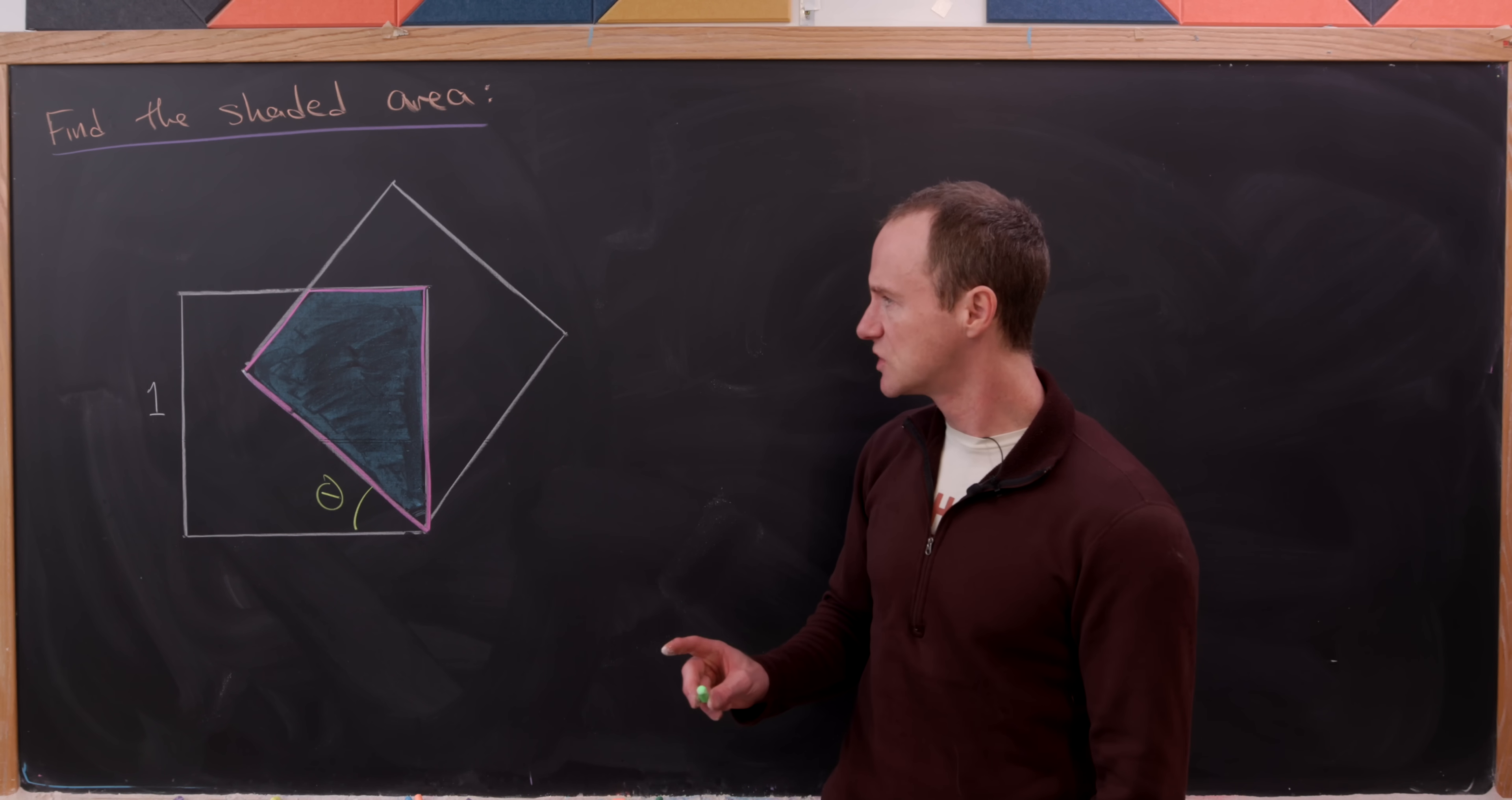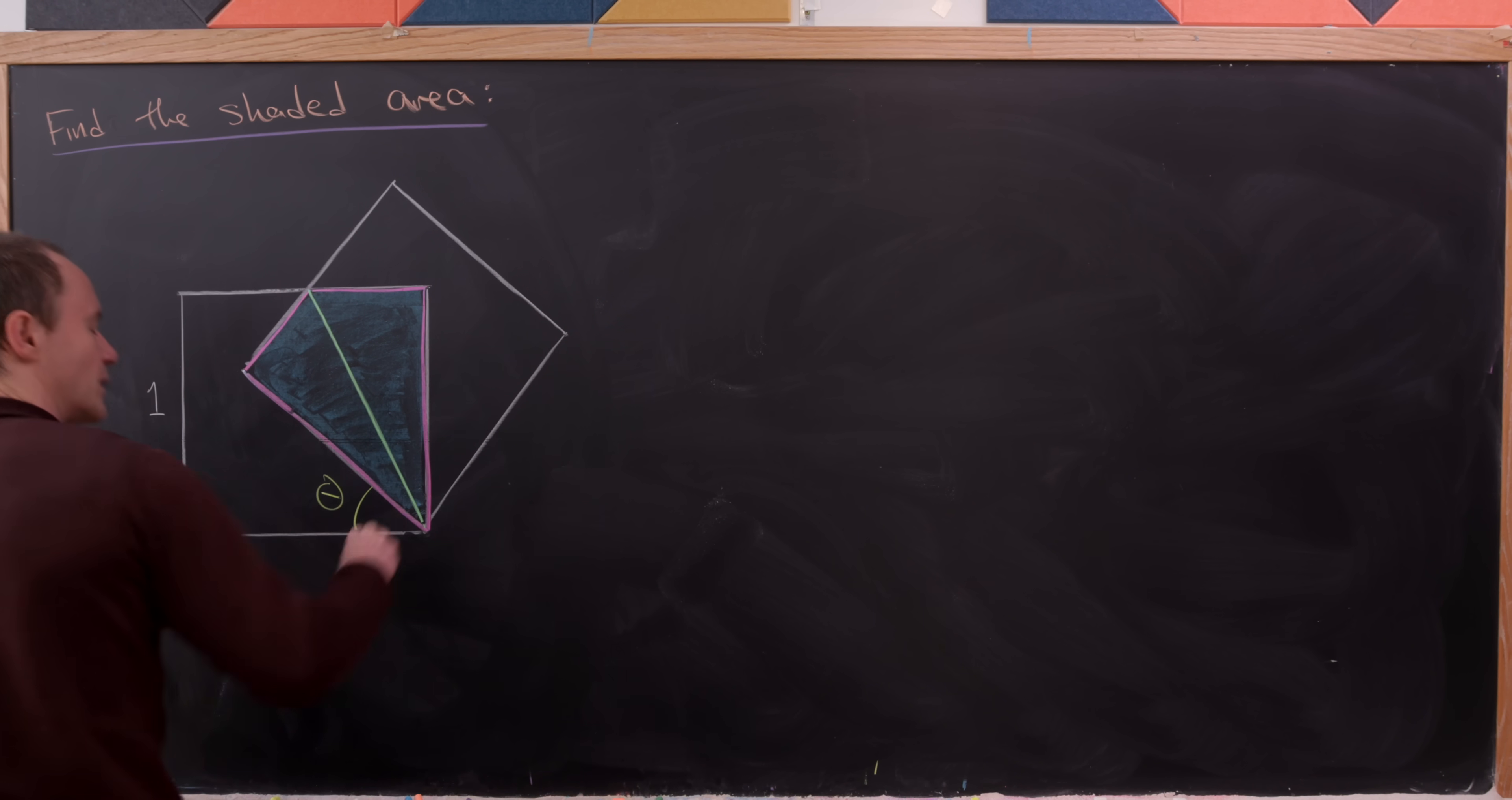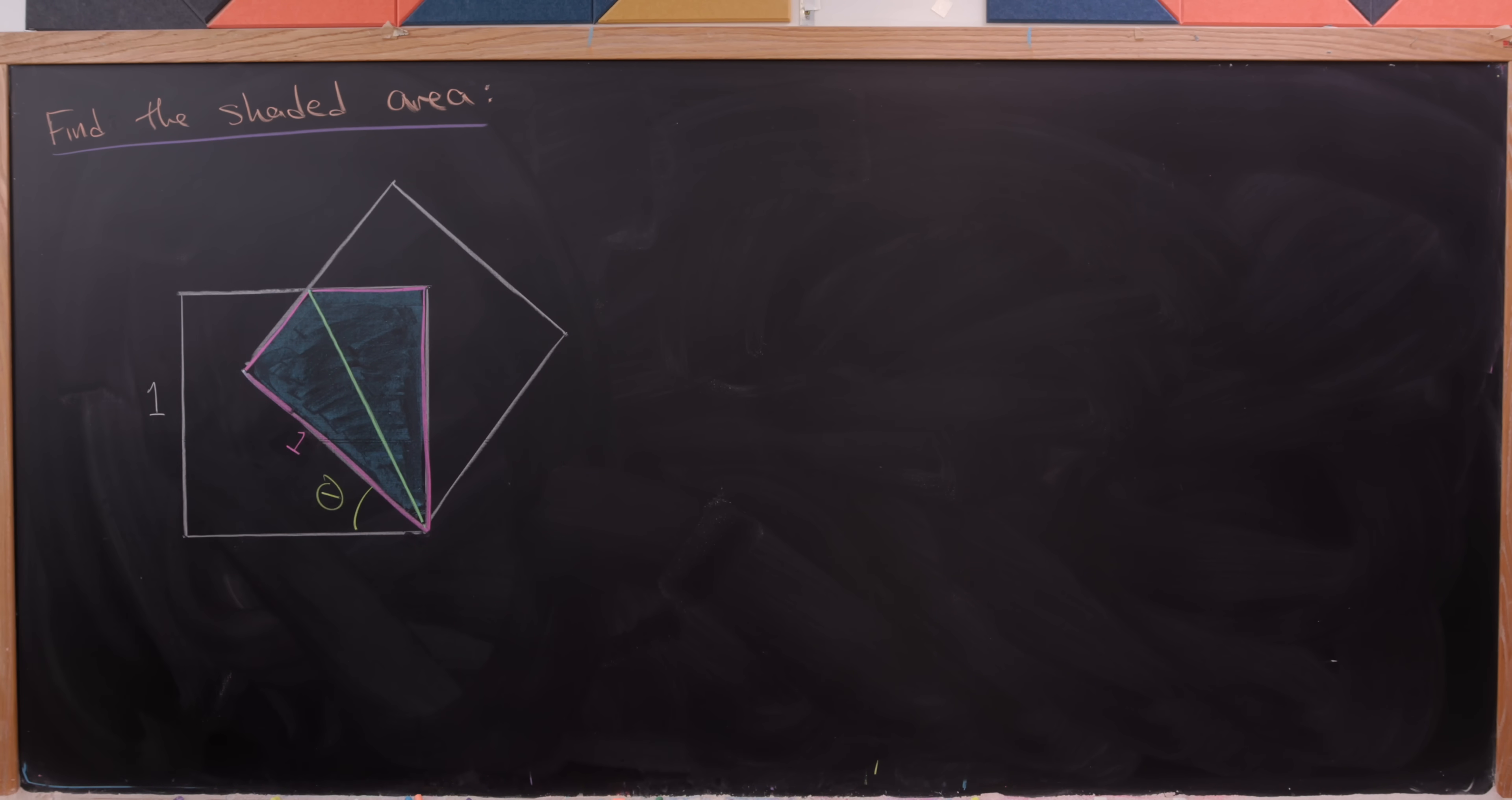Okay so what we're going to do here is introduce a new line segment from this intersection point here to this intersection point up here. So let's see if I can get that in there straight. Okay so there's my new line segment. Then I'm going to use the fact that these two squares are really the same they're congruent to each other to bring a side length measurement of one over here.